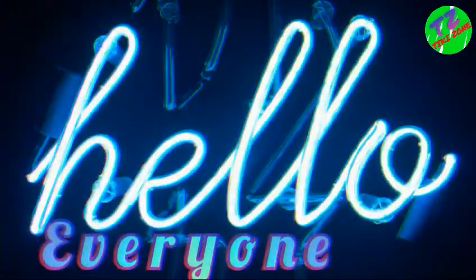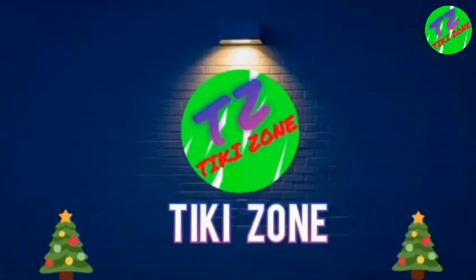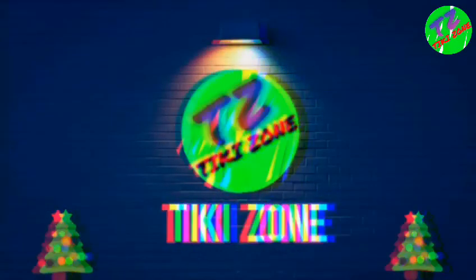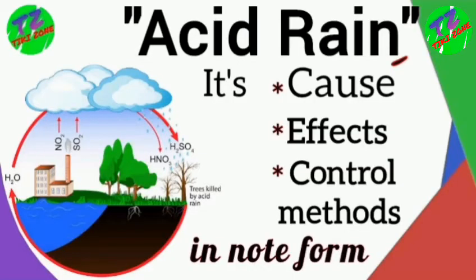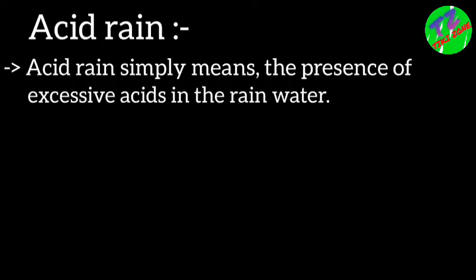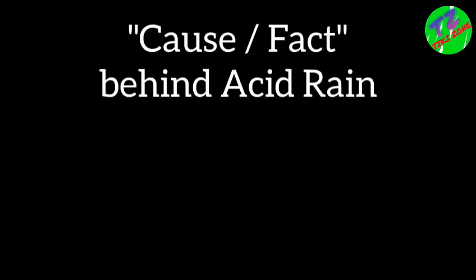Hello everyone and welcome to our channel TK Zone. In this video we will discuss acid rain. First of all we have to know what acid rain means. Acid rain simply means the presence of excessive amounts of acids in the rainwater. We will also discuss what are the causes behind acid rain.